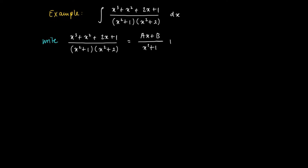x squared plus 1 and x squared plus 2. So we try to find four constants A, B, C and D such that Ax plus B divided by x squared plus 1 plus Cx plus D divided by x squared plus 2 equals the original rational function Rx divided by Qx.